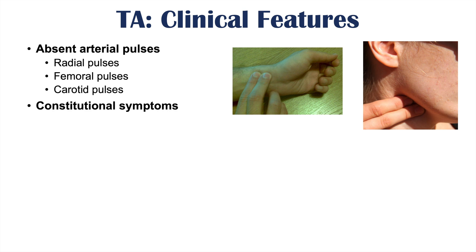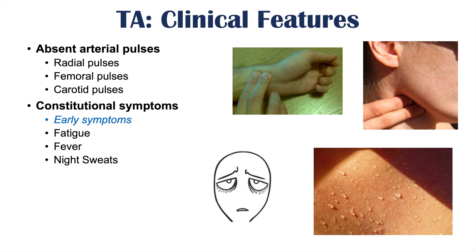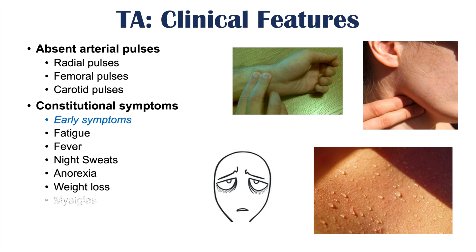Along with absent arterial pulses, there can be constitutional symptoms, which are often early symptoms of this disease. These include fatigue, fever, night sweats, anorexia (decreased appetite), weight loss, and myalgias or muscle aches and pains. A patient may generally not feel well and present with fatigue, fever, weight loss, and generalized achiness as early signs of Takayasu's Arteritis.